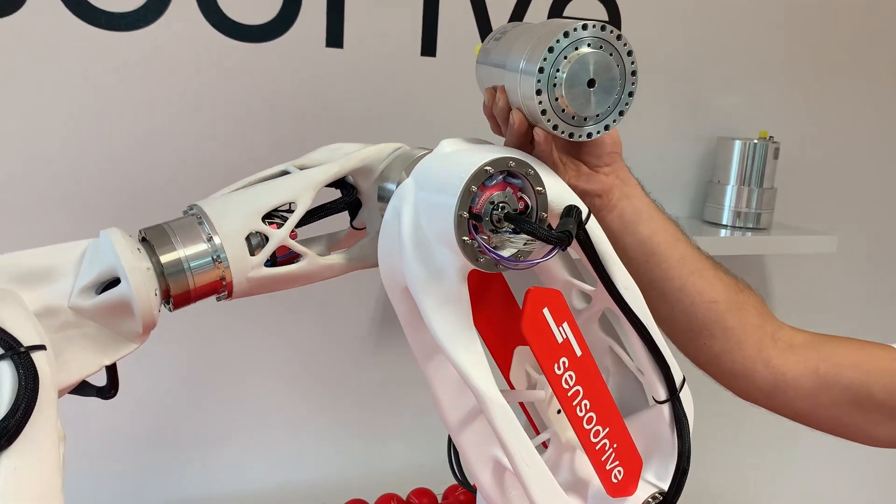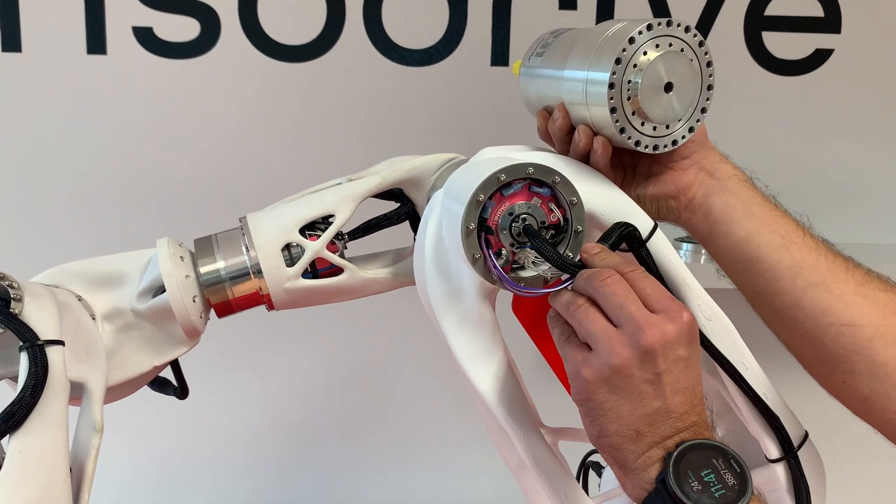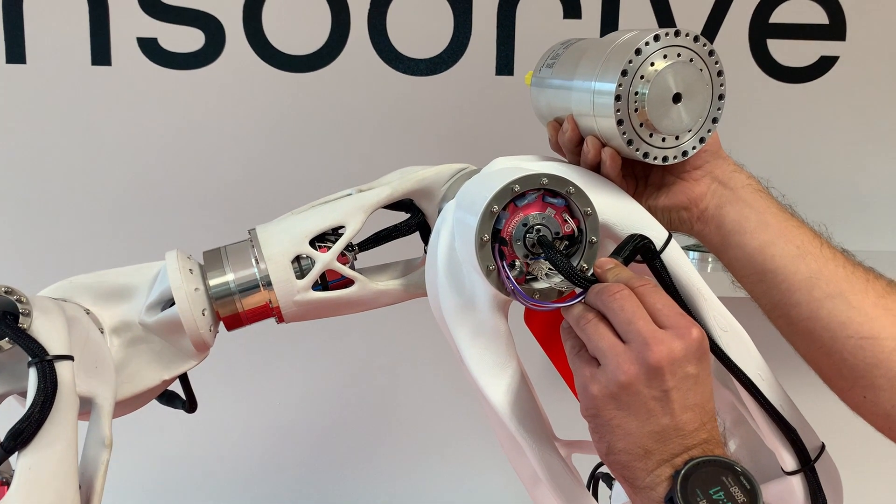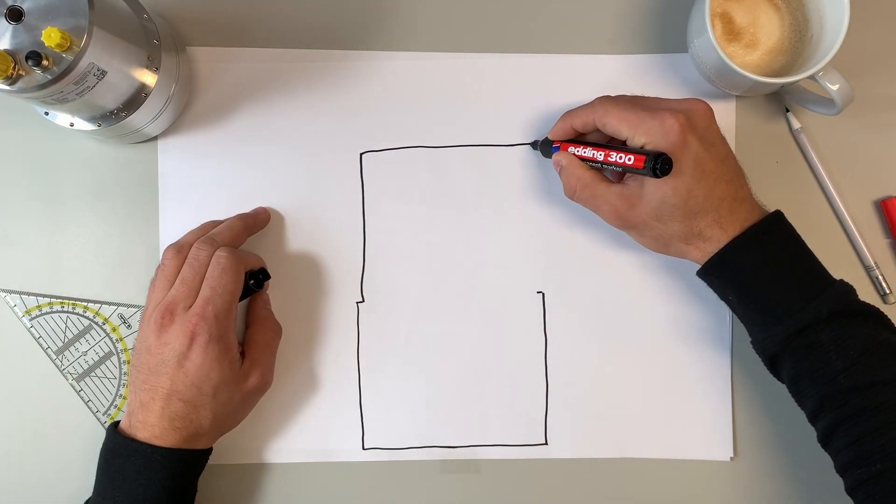You want to put your know-how and time into the application and not in the redevelopment of technology. That's why you need a sensor joint. Sensor joints are highly integrated, compact drive units that have everything cobot drives need.